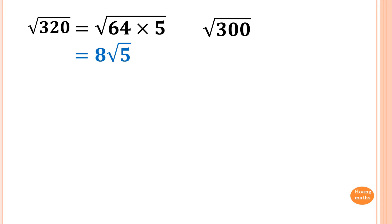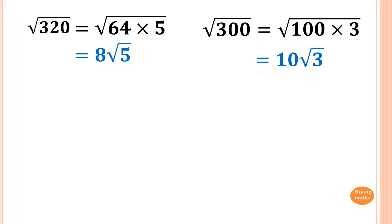Next one: √300. Simple one. What square number is there? 100, right. 100 times 3, so √100 is 10, so the answer is 10√3.